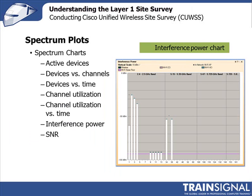In addition to the spectrum plots, there are spectrum charts worth examining. The active devices chart is a pie chart showing what kinds of devices are creating different types of RF activity. Devices versus channels shows the number of devices on different channels — you can select a specific channel or analyze across the entire frequency band. Similarly, devices versus time detects the number of devices seen at different times.